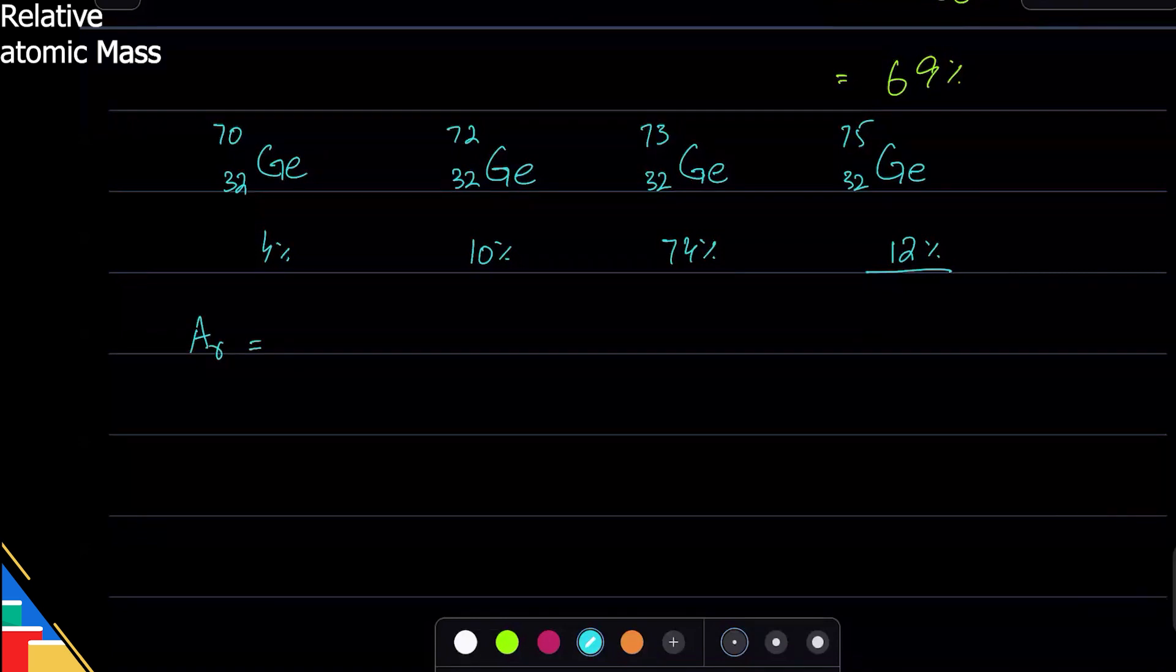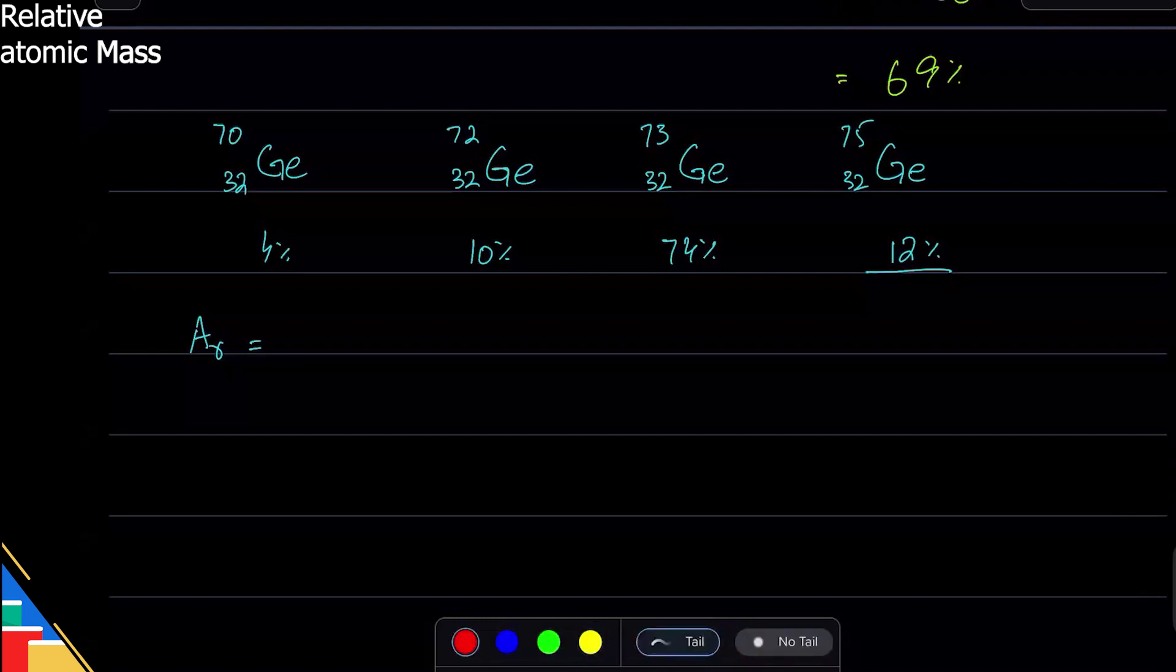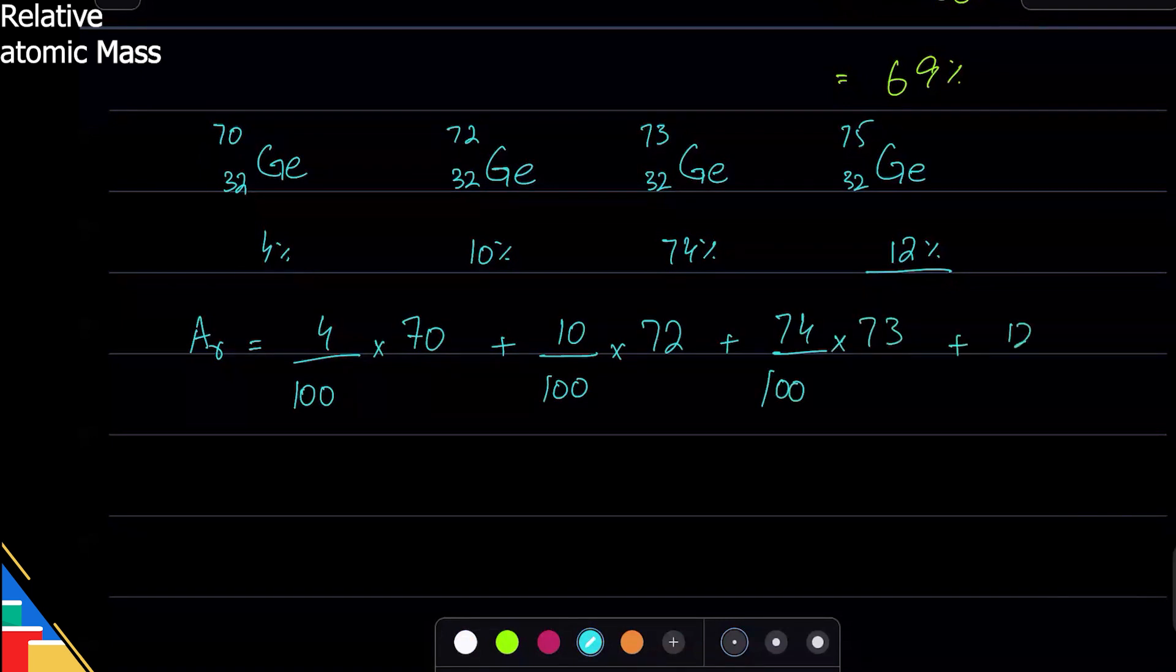Now I want you to calculate the Ar. You will need a calculator for this. We have the percentage, we will multiply the mass number with the percentage. Good question. And interestingly, it doesn't matter. Percentages are interchangeable. So get 4% times 70. Here's how you should be doing it. It will be 4%, which you can write as 4 over 100 if you want, or you can just write 4% times 70 plus 10% times 72 plus 74% times 73 plus 12% times 75. And that's easy. That's how you find the relative atomic mass.